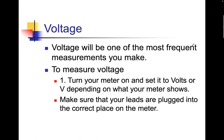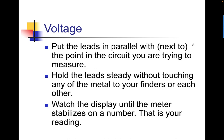Voltage will be one of the most frequent measurements you take. To measure voltage, turn your meter on and set it to volts or V, depending on what your meter shows. Make sure your leads are plugged into the correct place on the meter. Put the leads in parallel with, or next to, the point in the circuit you're trying to measure. Hold the leads steady without touching any of the metal to your fingers or each other. Watch the display until the meter stabilizes on the number — that is your reading.